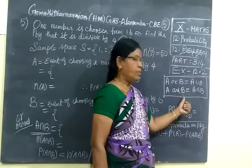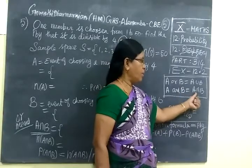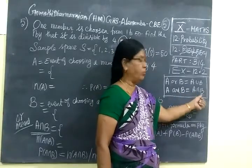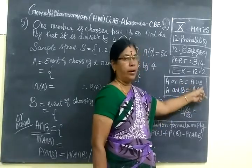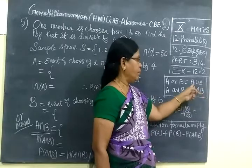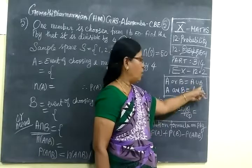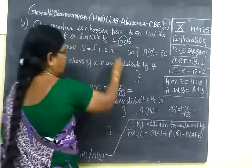And means the event should be in A as well as in B. It should occur in both the events. OR means either in A or in B. The event may occur either in A or in B.